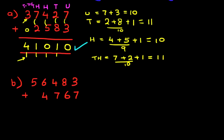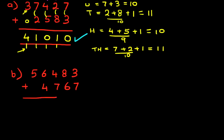This time we're going to have slightly larger numbers. This time we've got 56,483 plus 4,767. Let's just scroll down to give us a bit more space.